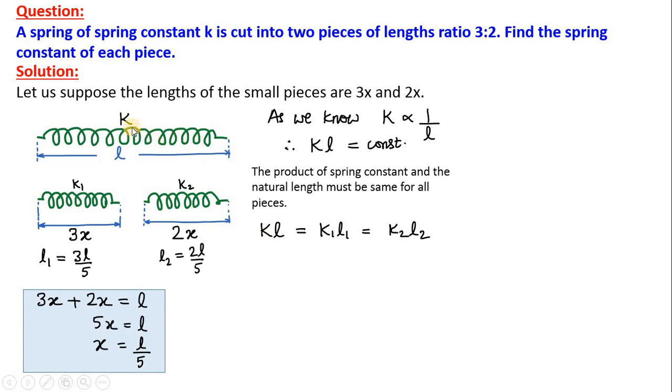Therefore, we can say the K into L of the original spring is equal to K into L of the small piece is equal to K into L of the other small piece. That means, K into L is equal to K1 L1 is equal to K2 L2. Now, we substitute the values of L1 and L2 here. So, we get this expression.